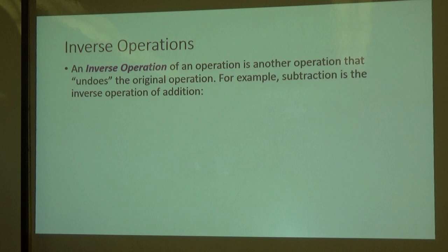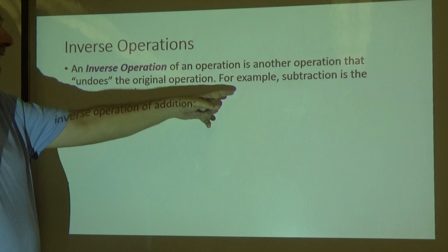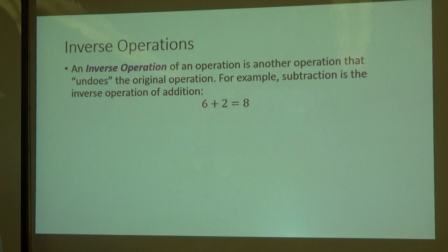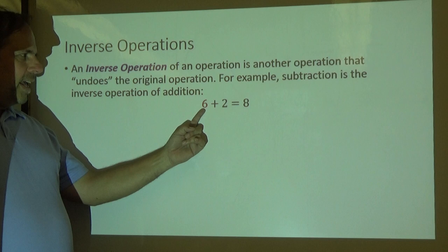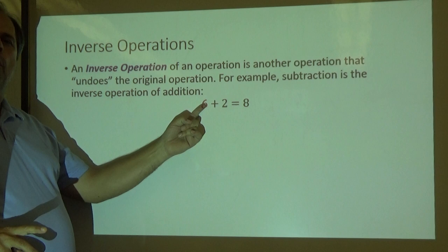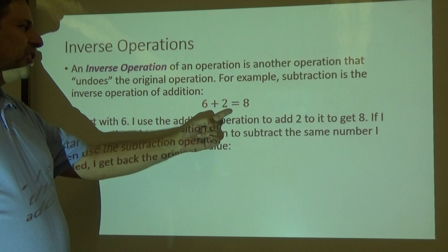An inverse operation. There's another purple word of an operation. So we have inverse operation of an operation. It's a second operation that undoes the original operation. For example, subtraction is the inverse operation of addition. Here's an example. Six plus two equals eight. It's pretty simple, right? We all know that. We start with the number six, add two to it, and we get eight. How would we get back to our original number of six? Well, I would subtract out what I added. I added two. Let's subtract two.